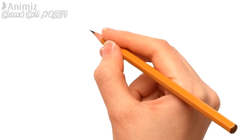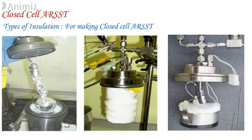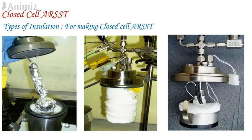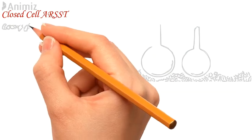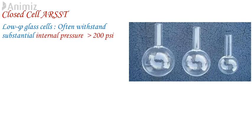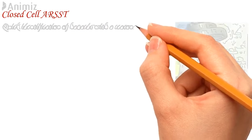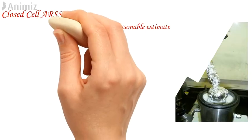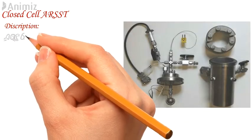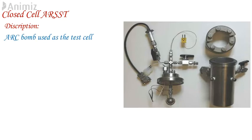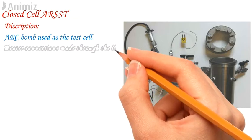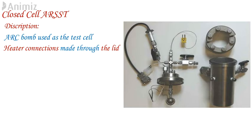In the closed cell ARSST configuration, a pressure tube is directly attached to the test cell. For low phi-factor testing, several styles of glass test cells are available with volumes from 5 to 20 ml, and combination test cells with a glass body and metal necks. Low phi-factor glass cells can often withstand substantial internal pressure up to 100 PSI, but even if the test cell ruptures, the contents are safely contained without damaging any expensive parts. A standard ARC bulb can be used as a test cell, attached to the underside of the vessel lid. The heater connections are made through the lid, a short heater belt is used, and the assembly is wrapped in foil. A nest of insulation is placed inside the containment vessel to receive the test cell.